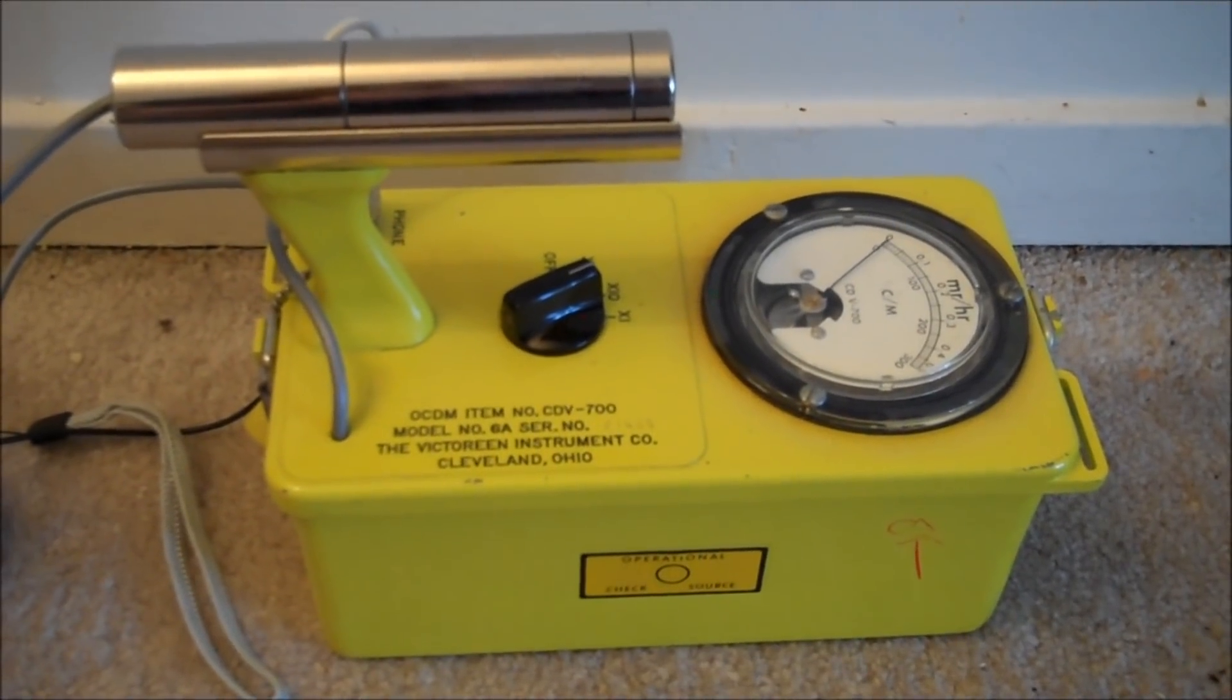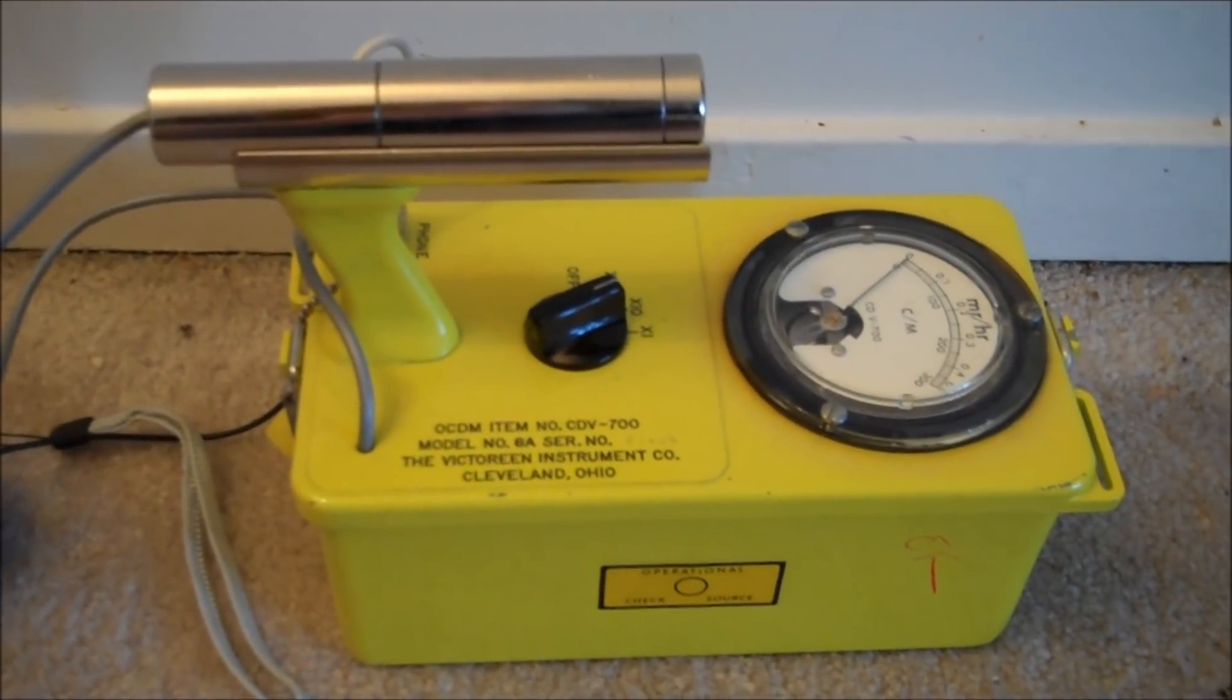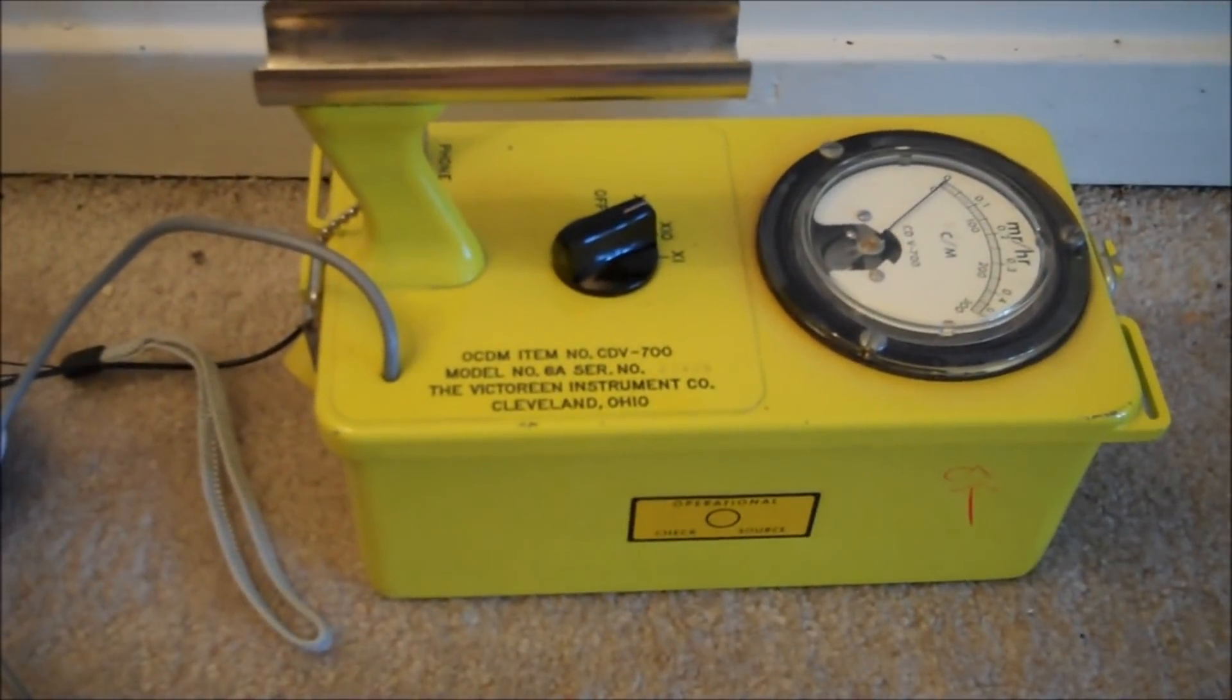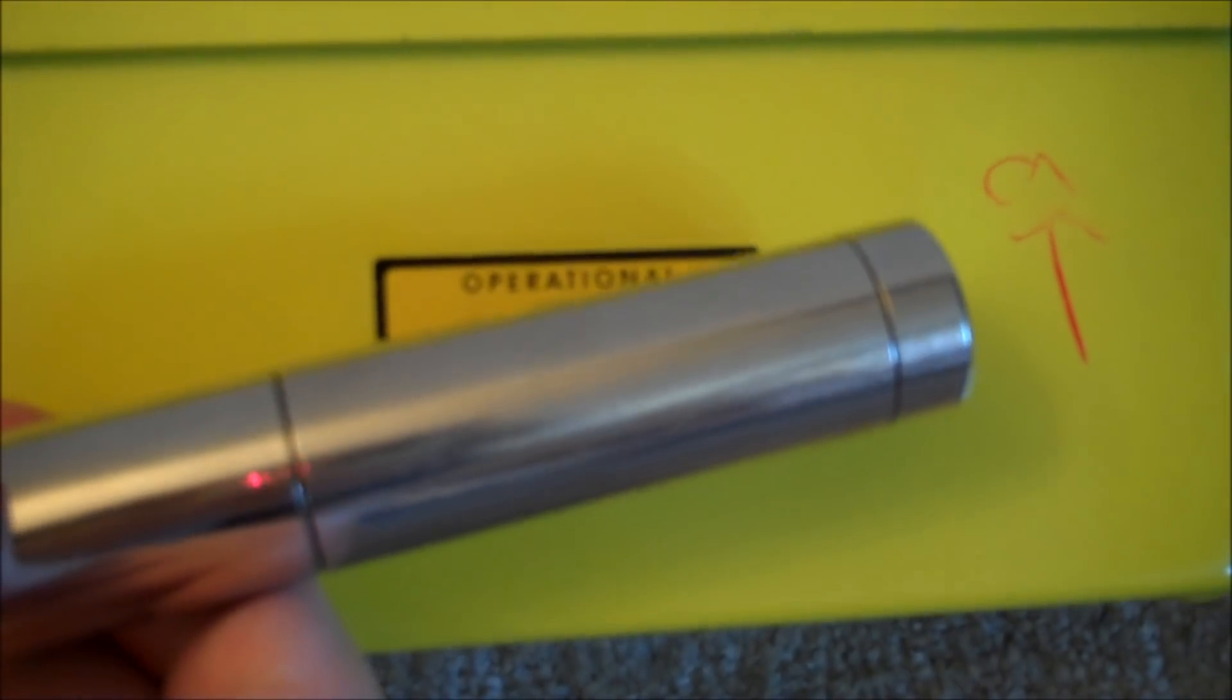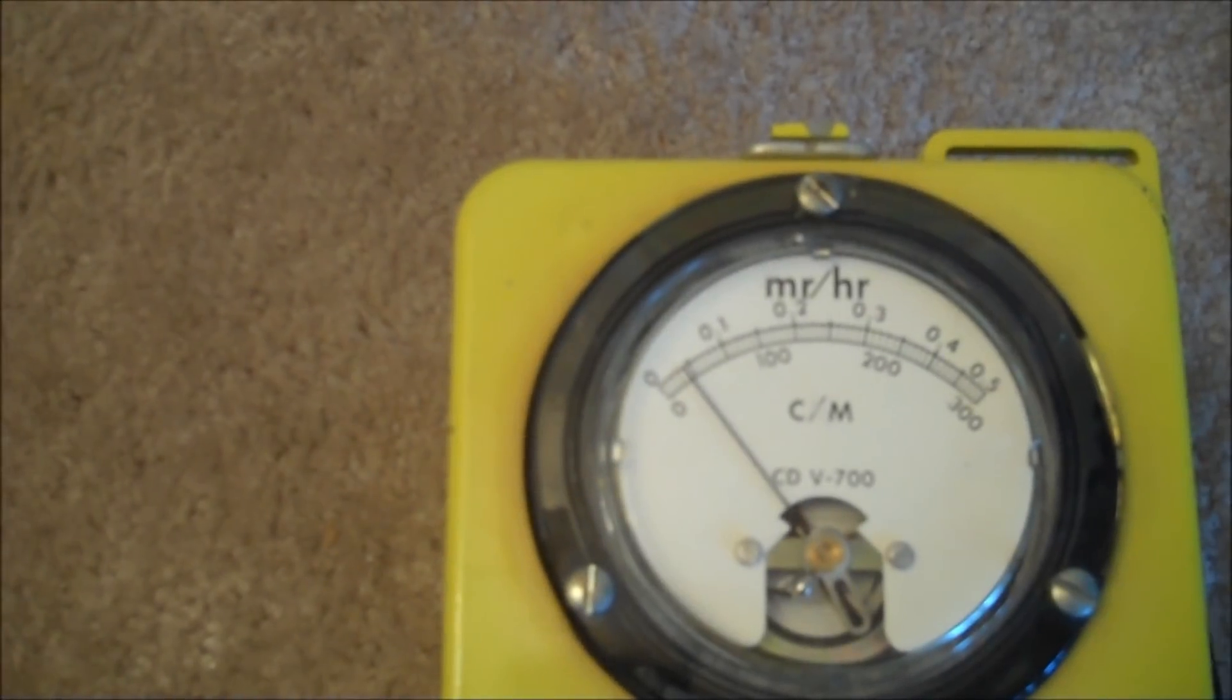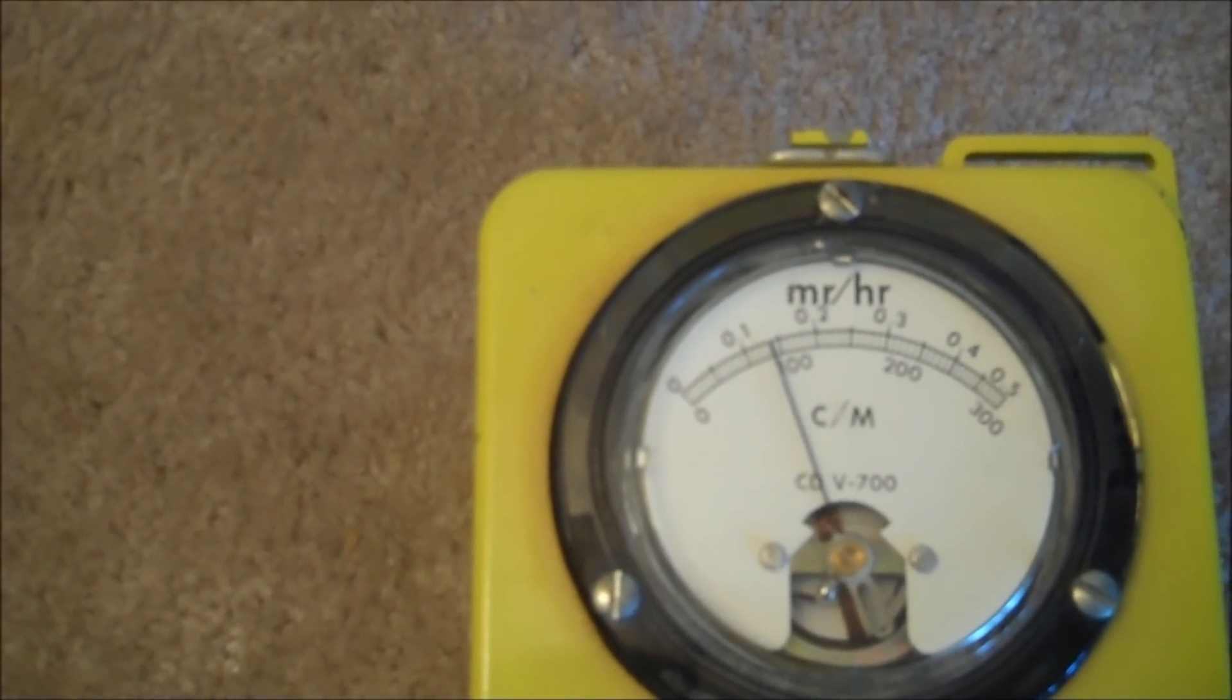Uranium has been used by people for many years. For example, the check source on this 1960s vintage Geiger counter. We can test to see if the Geiger counter is working by using the operational check source on the side. This unit is working.